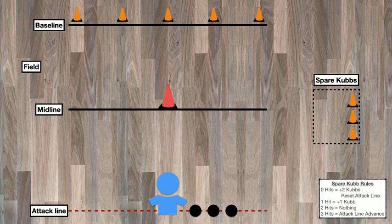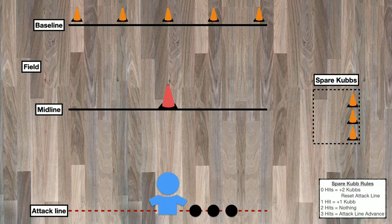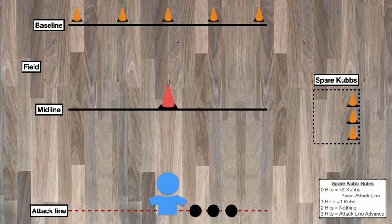Now that we're set up, let's play. The object of the game is to knock down all of the Kubbs behind the baseline using the balls, then ultimately knock down the King. If, however, you knock down the King before getting all the Kubbs, you automatically lose, so we don't want to do that.